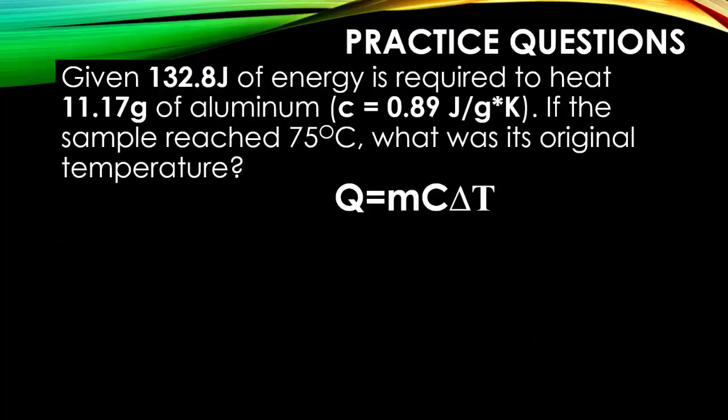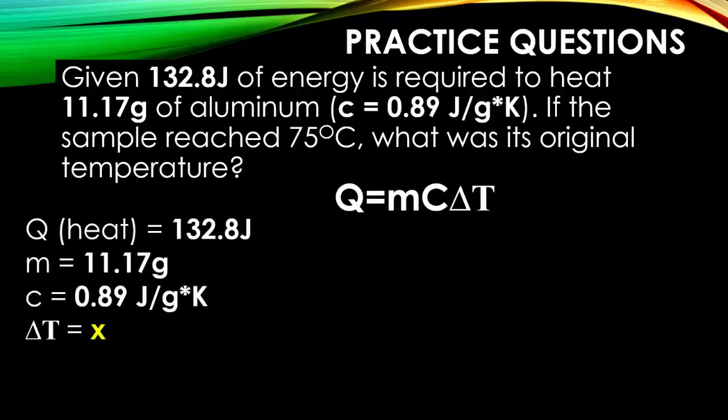In our last question, you're given 132.8 joules of energy, and we're going to be using that to heat 11.17 grams of aluminum. Aluminum has a specific heat capacity of 0.89 joules per gram Kelvin. If the sample reached 75 degrees Celsius, that means it's the final temperature. What was its original temperature? We're going to plug in the values that we know. We know that our amount of heat given is 132.8 joules. We know the mass of the sample is 11.17 grams. We know the specific heat capacity for aluminum is 0.89 joules per gram Kelvin. Now we have a final temperature, but we don't know what the ΔT is. The final temperature and ΔT are not the same thing.